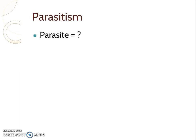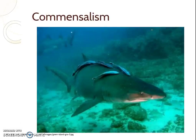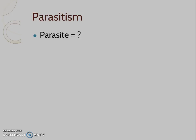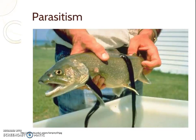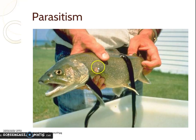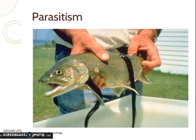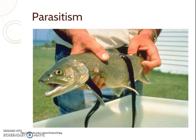Last but not least is parasitism — you guys probably already know this one. If you're using smiley faces, do smiley face and straight face for commensalism. For parasitism, one organism benefits and one is harmed — do smiley face, frowny face. You're looking at lamprey eels here. Lampreys are an invasive species in Lake Michigan; they drill into fish, and eventually that kills the fish. The lamprey gets food, energy, and nutrition — the smiley face — and the fish obviously gets the frowny face. Things like fleas, ticks, and some types of worms are also common parasites.